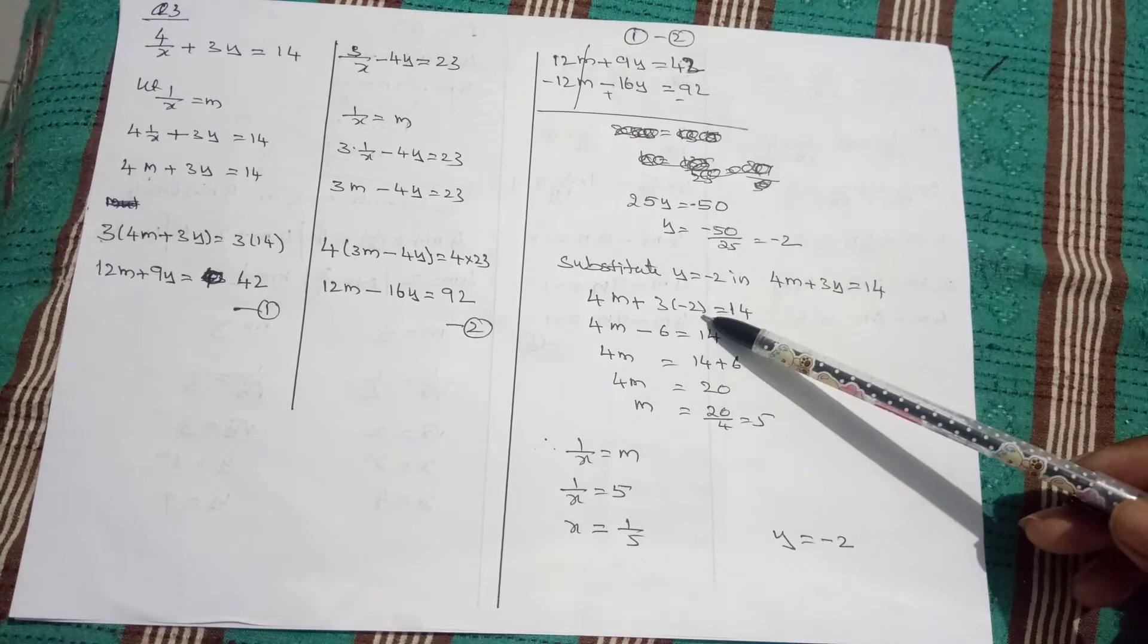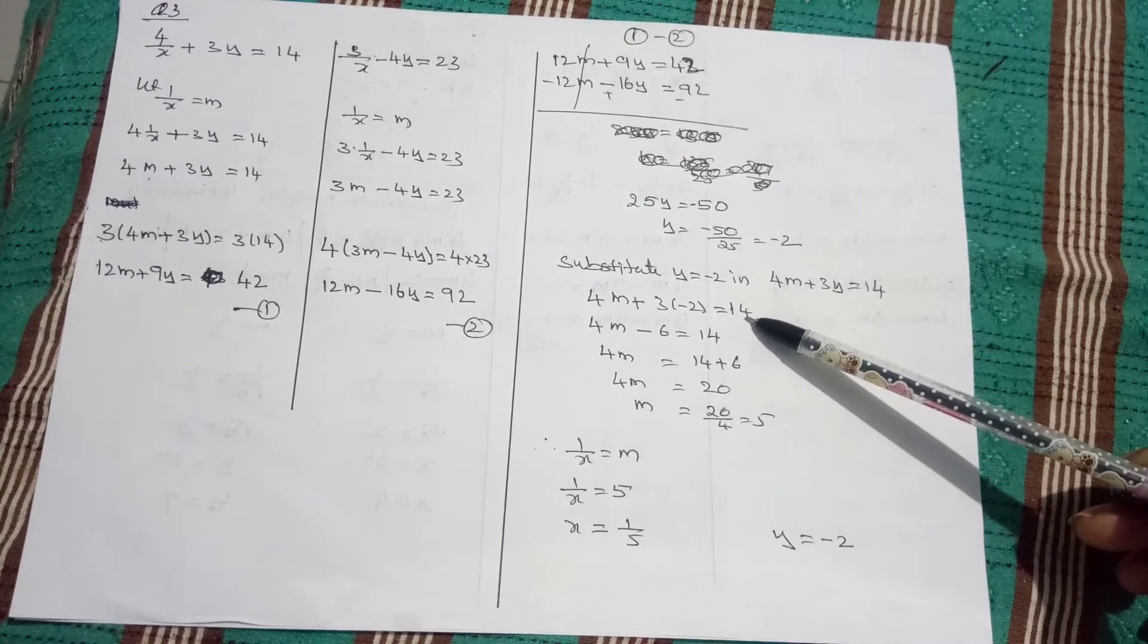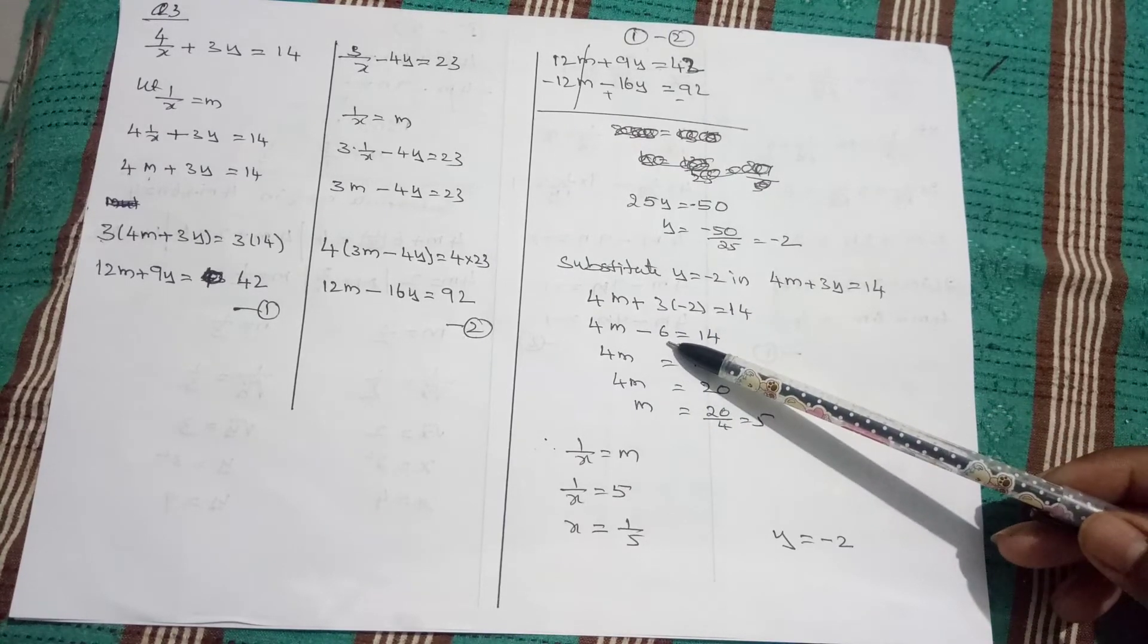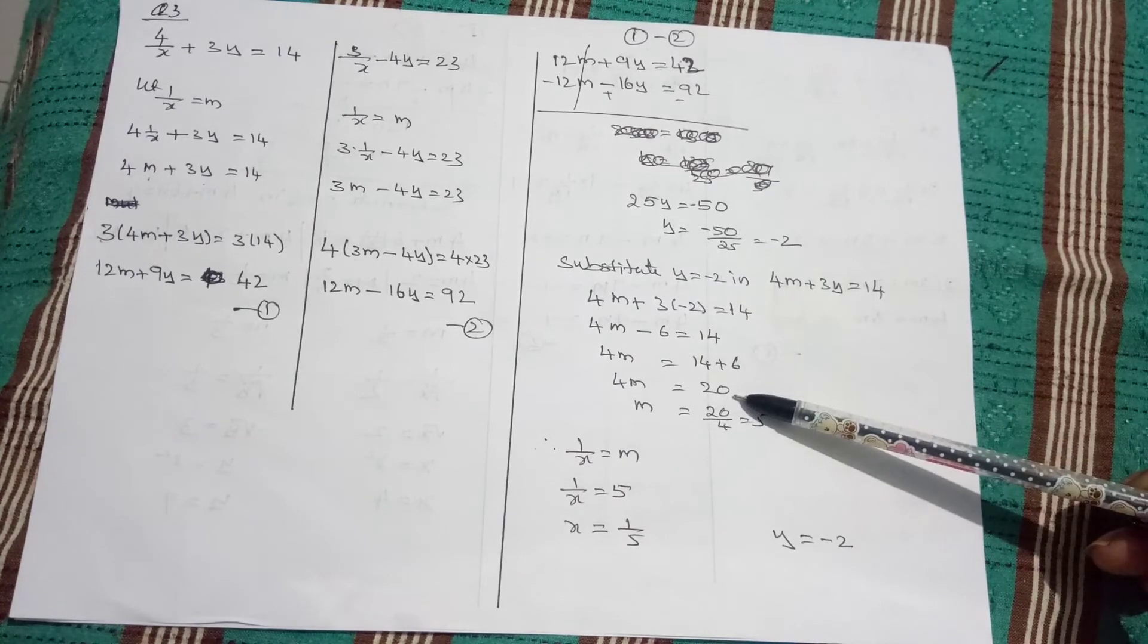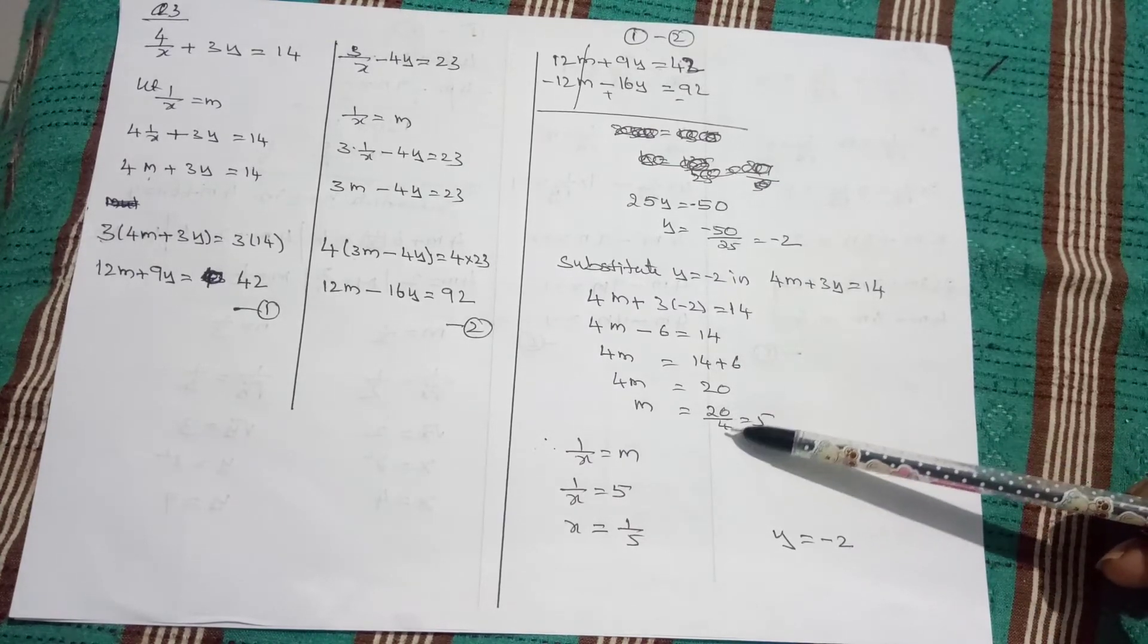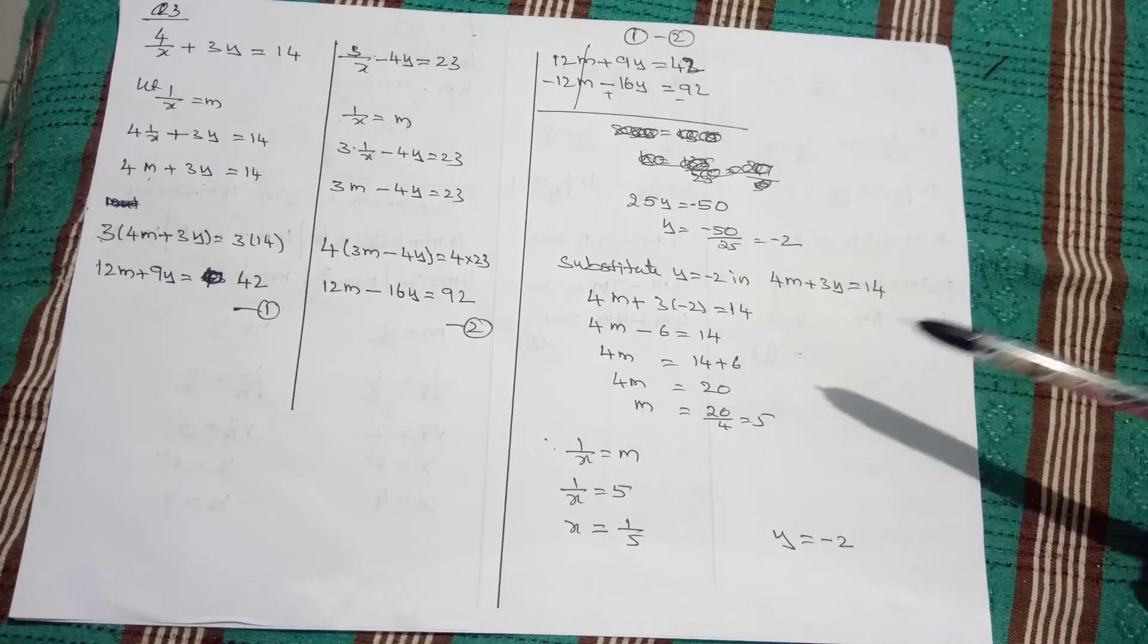4m plus 3 of minus 2, that is 14. Here minus 6. The minus 6 comes to this side, plus 6 and 20. m equals 20 by 4, that is 5.